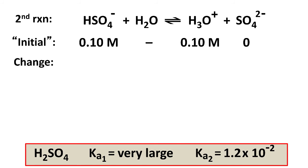And then there will be a change where the HSO4 minus will go down a little, the H3O plus, and the SO4 2 minus will go up a little. And at the second equilibrium end, we have 0.1 molar minus x for HSO4 minus,